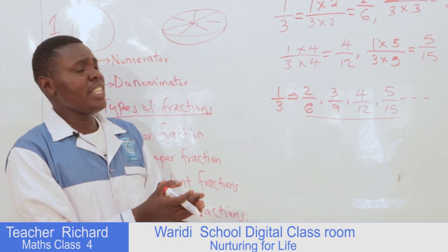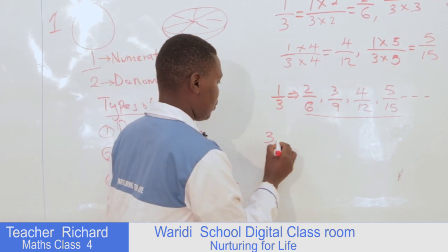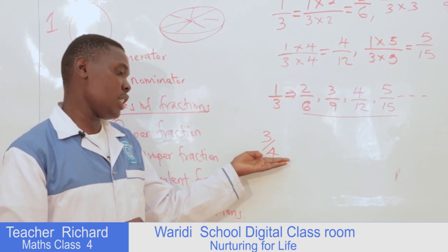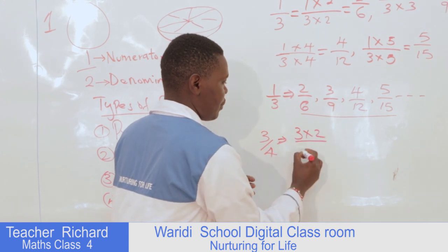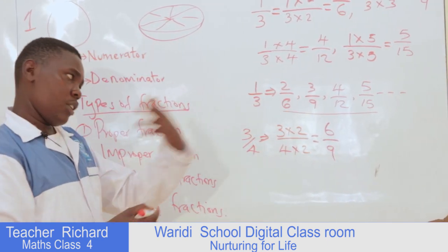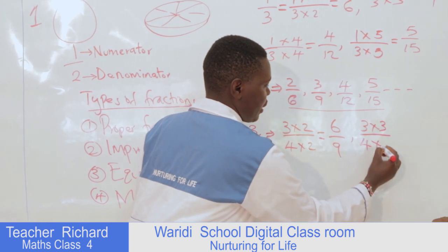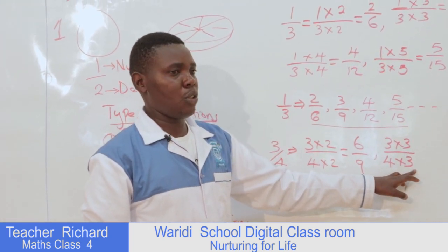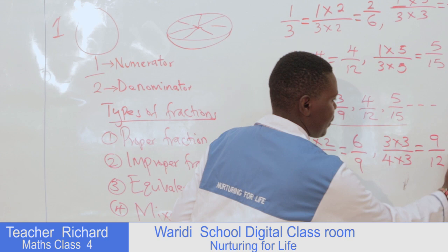Let me give another example: three over four. I want to get fractions which are equal to three out of four, or three quarters. I start the process: three times two over four times two — I'm going to get six out of eight. I can continue: three times three over four times three. Don't forget — what you use at the numerator, you do the same to the denominator; don't change the number. So here I'm going to get nine out of twelve.